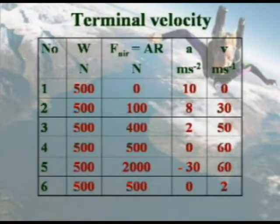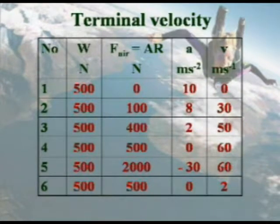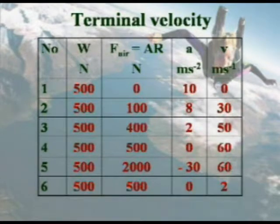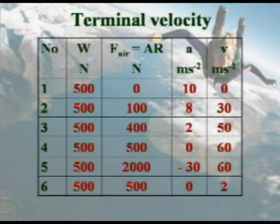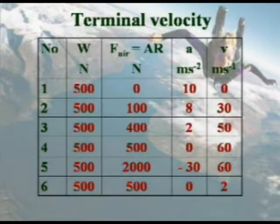This table shows the force, acceleration, and velocity of the skydiver at different stages. The weight is always constant at all stages. The force due to air resistance increases: 0, 100, 400, 500 Newton up to the opening of the parachute. The acceleration decreases from 10, to 8, to 2, and then 0. When acceleration is 0, velocity no longer increases — it is constant. When the parachute opens, at 2000 Newton the acceleration is minus 30 meters per second squared, then returns to 0, at which point the terminal velocity is 2 meters per second.